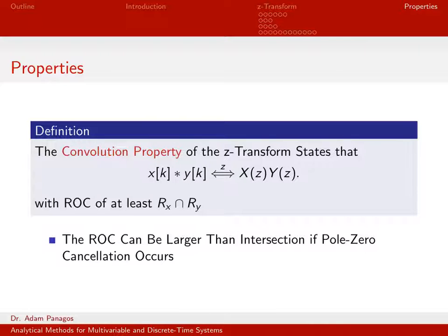Again, we'll get to pole cancellation here in an example towards the end of this sequence of videos. But in general, the region of convergence is going to get smaller if this does not occur.